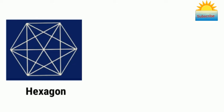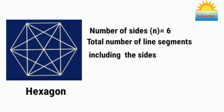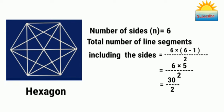For example, in a hexagon, the number of sides is 6. So the total number of line segments including the sides is 6 × (6-1) / 2, that is equal to 6 × 5 / 2, or 30 / 2, which is equal to 15.